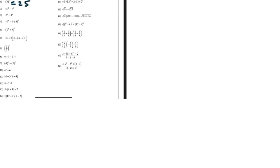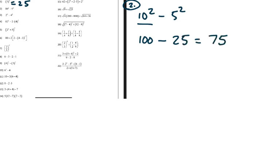Number one: what is 5 squared? 5 squared means 5 times 5, which is 25. Number two is 10 squared minus 5 squared. 10 squared is 100, 5 squared is 25, so 100 minus 25 is 75. The biggest trap with exponents is students multiply the base by the exponent — like saying 10 times 2 is 20 — instead of multiplying the number by itself. Be careful of that going forward.